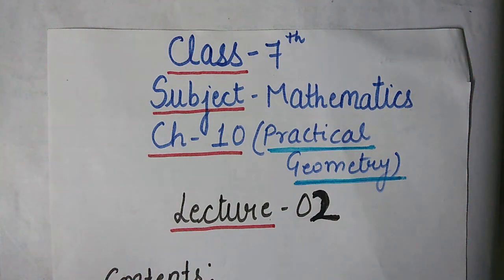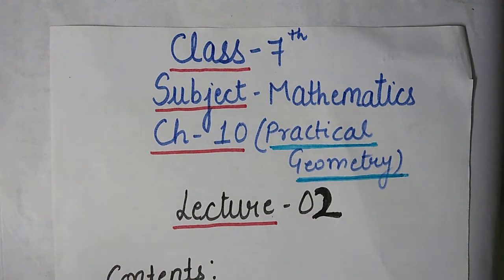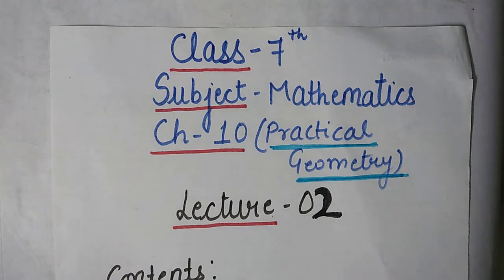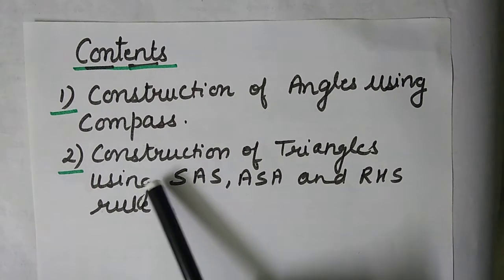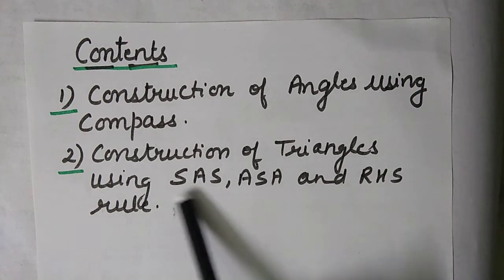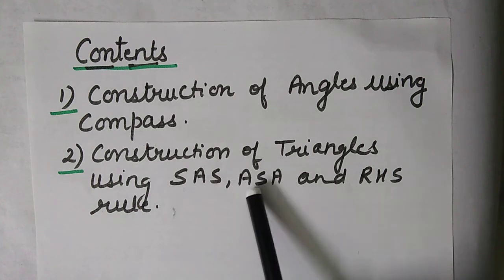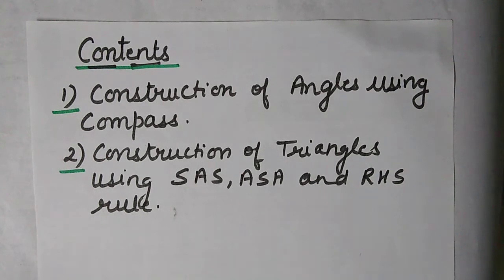Good morning dear students. This video is for students of class 7th, subject mathematics, and this is lecture number 2 of chapter 10: Practical Geometry. In lecture number 1 we learned how to construct a parallel line and how to construct a triangle when all the sides are given. In this lecture we will revise how to construct angles using compass, and then learn to construct triangles using SAS, ASA, and RHS rule — when two sides and one angle, two angles and one side, or a right angle, hypotenuse, and one side are given.